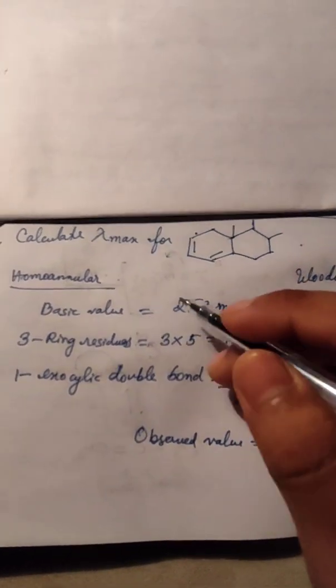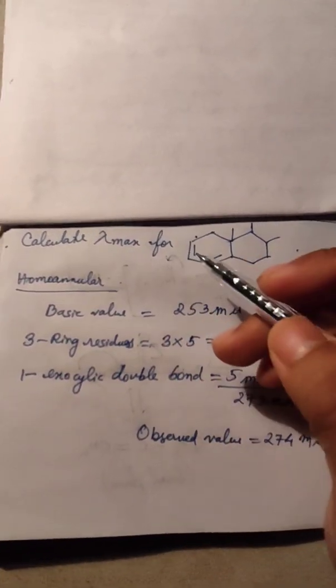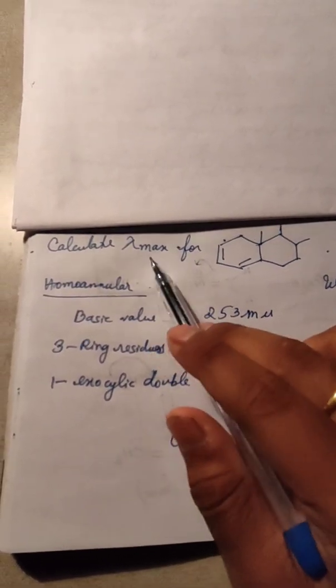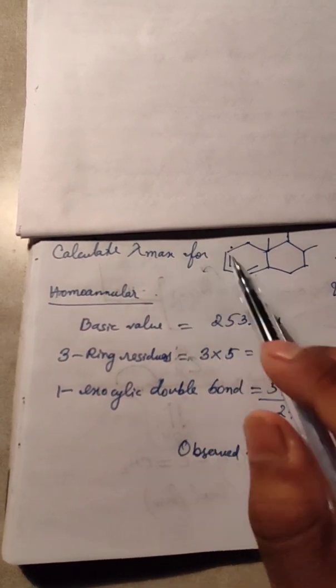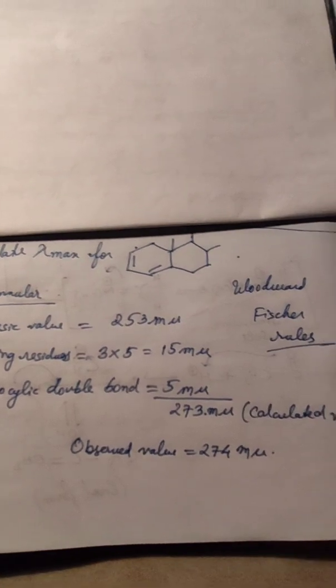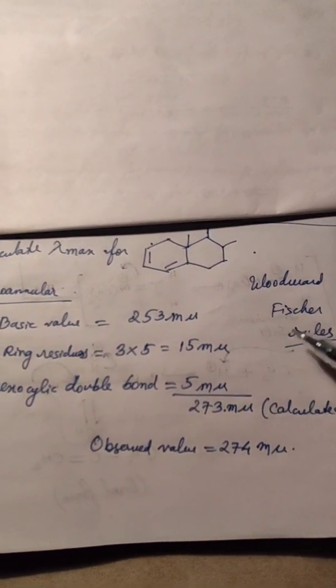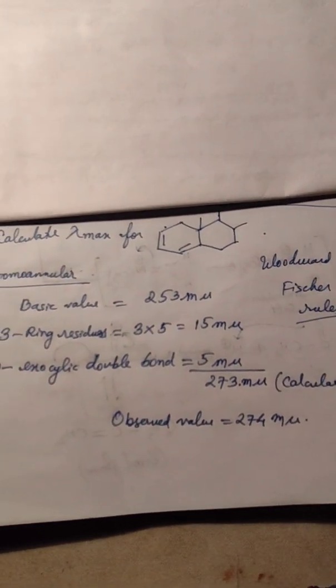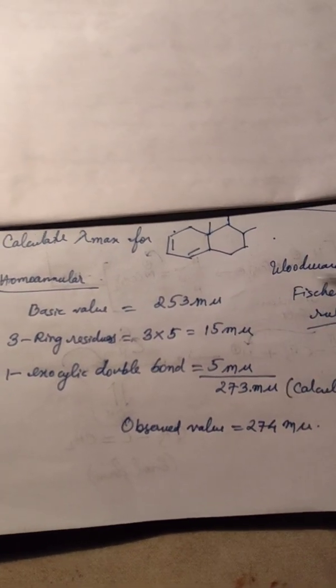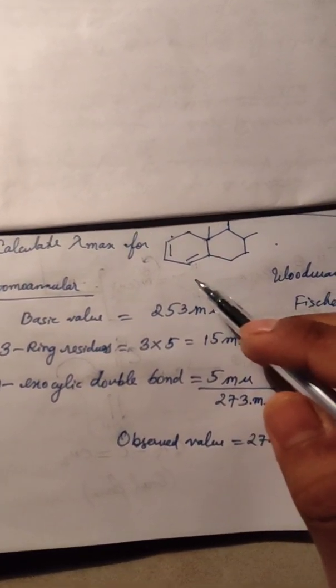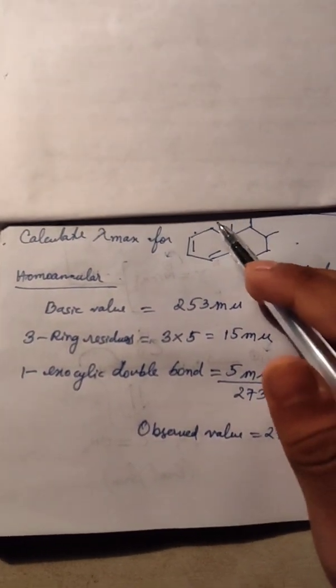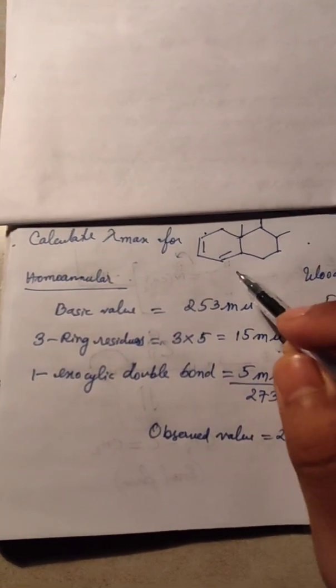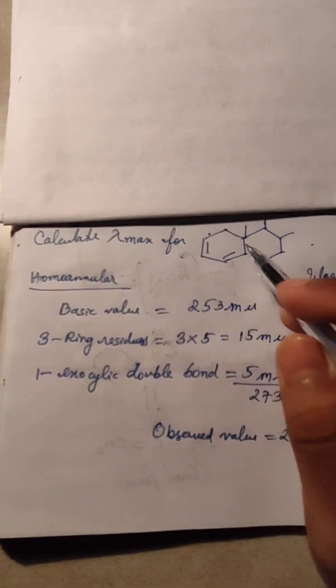Good evening friends, today I am going to discuss a very interesting topic: lambda max, the maximum wavelength of any compound. We can calculate it by memorizing the Woodward-Fisher rules. If you type Woodward-Fisher rules in Google, you can easily get the values for any structure. Today I am going to discuss this structure and calculate the lambda max for it.